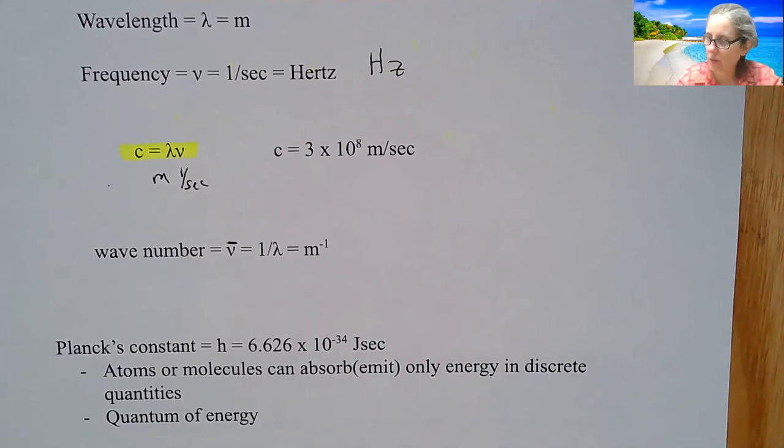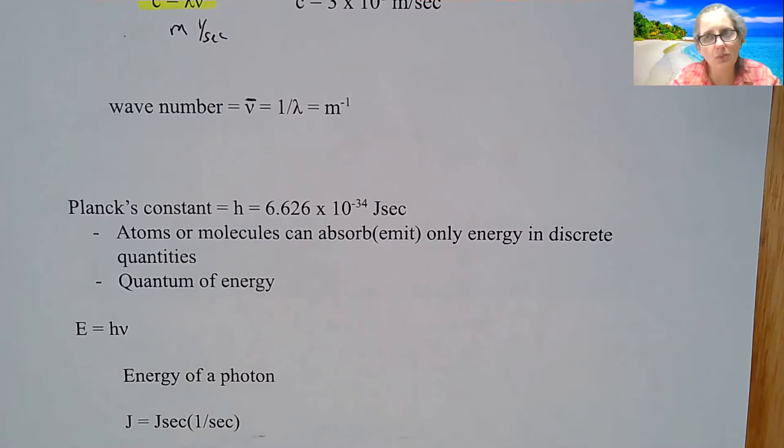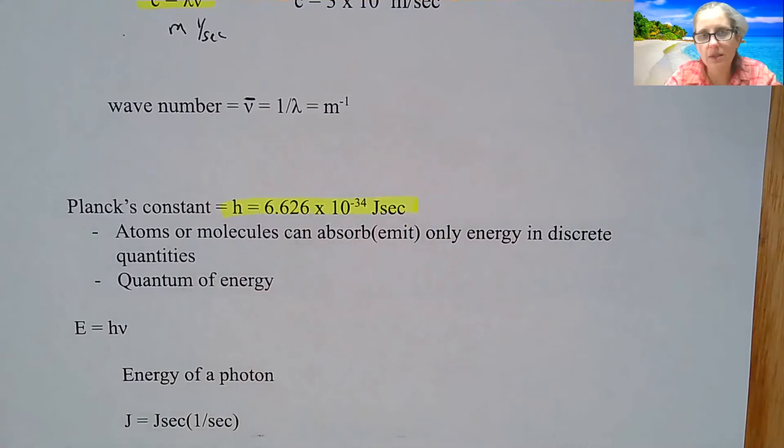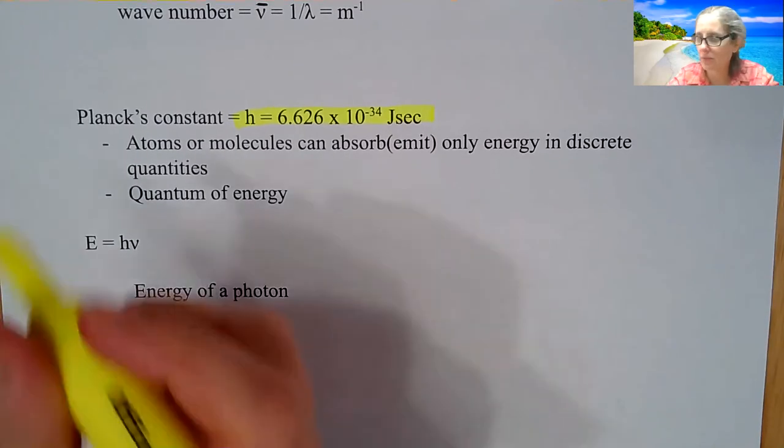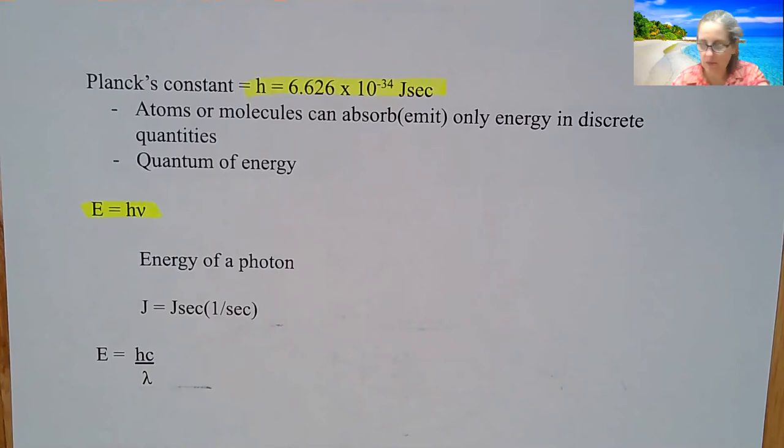If we take light, there was a scientist called Planck who figured out there was some relationship to the light and its particular energy. He came up with Planck's constant, 6.626 times 10 to the negative 34 joule seconds. Atoms or molecules can absorb or emit only energy in discrete quantities which is a quantum of energy. This is the quantum mechanical model of how we think the atom exists, and more specifically the electron.